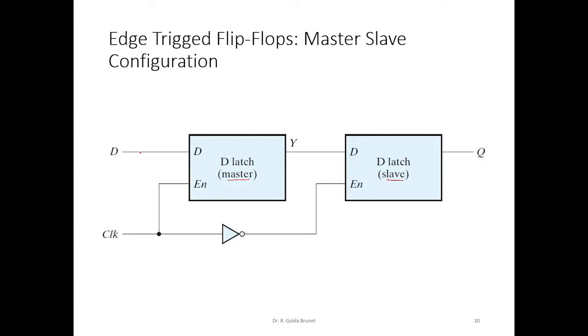The external D input is connected to the master, and there is a clock which enables the master D latch. The negation of the clock is going to enable the slave D latch.